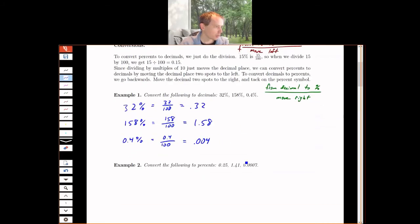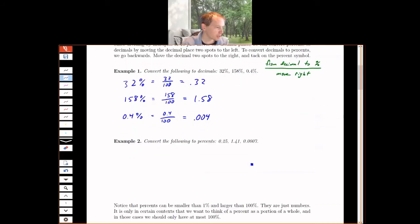Going the other way, converting to percents, to convert to a percent I want it to be a fraction over 100, so I'm going to do the opposite. I'm going to move the decimal right two places. So if I take 0.25, I move the decimal right two places and get 25%. 1.41 becomes 141%, and 0.0007, if I move the decimal place right two places, I get 0.07 percent.